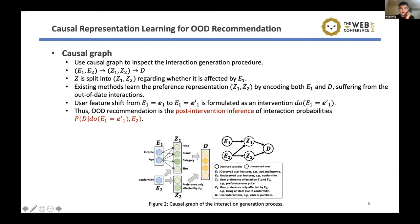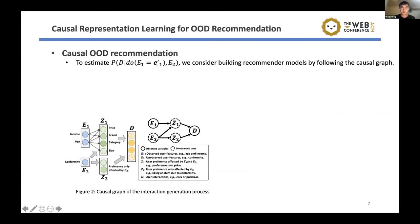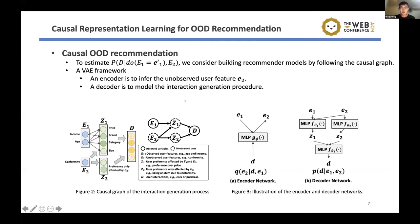We formulate the OOD generalization caused by observed user feature shift as an intervention over the observed user feature E1. We estimate what the interaction probability over D would be if E1 is changed. To estimate this post-intervention probability, we build a recommendation model following this causal graph — learning the structural functions between variables to describe the causal relations. To achieve that, we incorporate a VAE-based framework. Since E2 is unobserved, we use the observed features via an encoder to predict the unobserved user features, then feed both observed and unobserved features into a decoder to recover the interaction generation procedure following the causal graph.